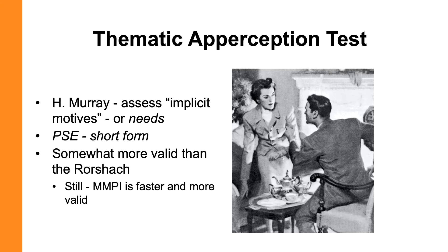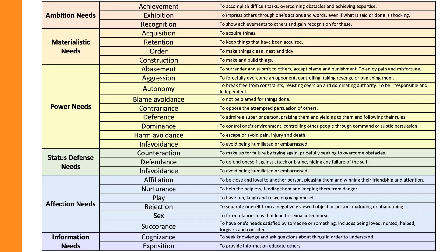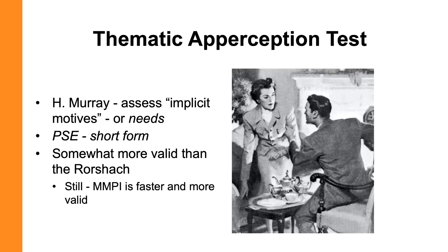Whereas Allport thought traits were the important building blocks of personality, Henry Murray thought it was needs. Although Murray didn't develop a specific scoring technique, up to 40 needs have been identified as scorable in the TAT. For example, if a TAT card depicts a married couple having an argument where the husband grabs the woman's arm, the needs identified might include need for affiliation (because of the marriage), need for dominance (the husband trying to control the wife's behavior), and if the wife is trying to escape so she doesn't get hurt, possibly need for harm avoidance.